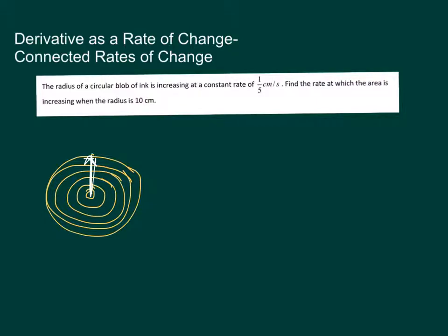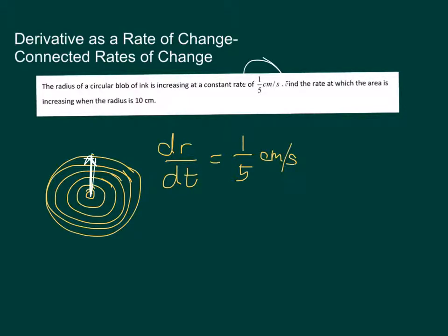The change with respect to time is given by 1/5 centimeters per second. So if I denote the radius as r, then the rate of change of r, which is dr/dt, is equal to 1/5 centimeters per second. A very important note is that the radius is changing with respect to time.